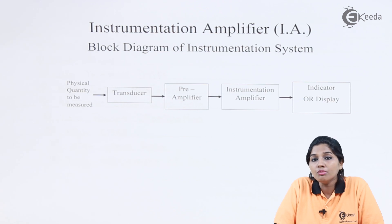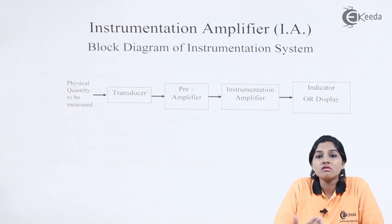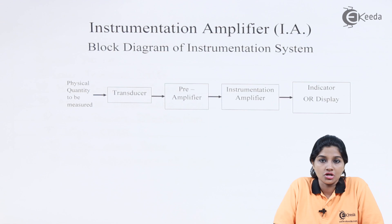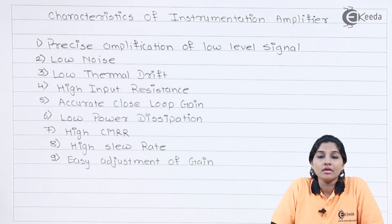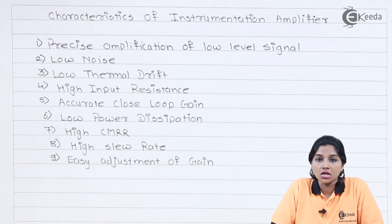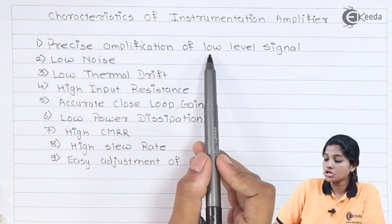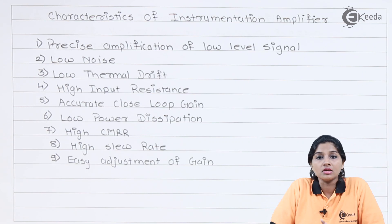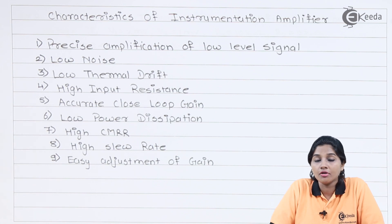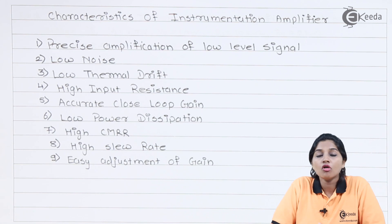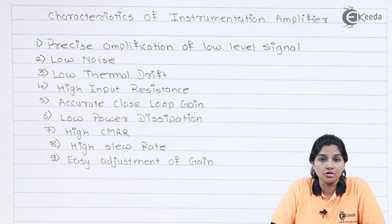The instrumentation amplifier is required to meet certain characteristics. Let's see what these characteristics or requirements are one by one. The first characteristic is precise amplification of low level signal. The instrumentation amplifier is expected to amplify the low level output from the transducer. Therefore, the gain of the instrumentation amplifier is required to be finite and as high as possible — typically 1000 — and it should be accurate and stable so that the instrumentation amplifier can provide precise amplification.